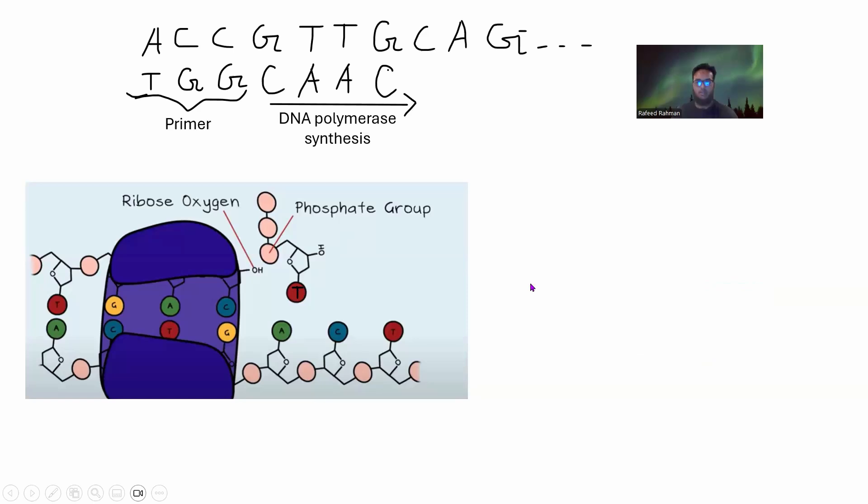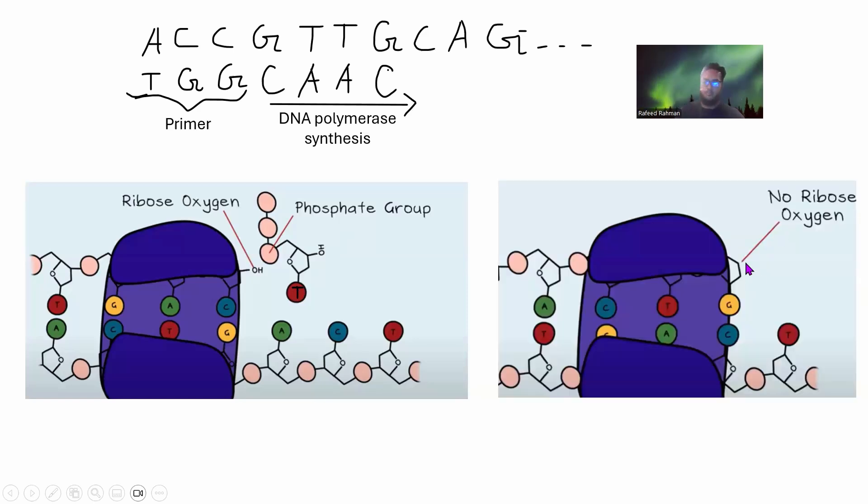Here's the main interesting thing: suppose instead of supplying a dNTP, you supply a ddNTP. In ddNTP there's no OH group because both oxygens are gone. If there's no OH group, it cannot attach with a new phosphate group. So the DNA can no longer be synthesized - it stops right here. These two fundamental concepts are the ones used for Sanger sequencing.